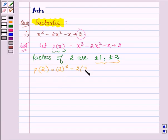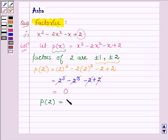Let us check out. Replacing x by 2 we have 2 cubed minus 2 times 2 whole square minus 2 plus 2, which is further equal to 2 cubed minus 2 cubed minus 2 plus 2. 2 cubed minus 2 cubed cancels out and minus 2 plus 2 cancels out and we have 0. This implies p(2) is equal to 0.